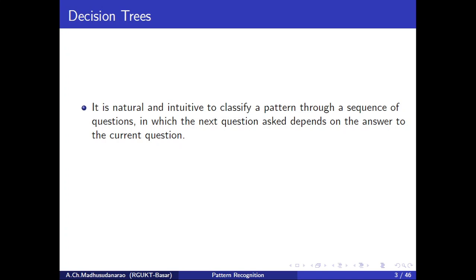For example, let's consider a set of creatures — birds and animals — and if I want to identify an elephant out of those creatures, the questions I am going to ask are as follows. I can say whether that creature can fly or not. If it won't fly, then my second question will be: is it having two legs or four legs? If it has four legs, then I can ask: is that creature big or small? If big, my next question is: is it having a trunk? If yes, then I can say the creature is an elephant.